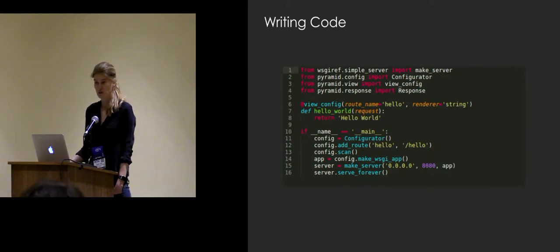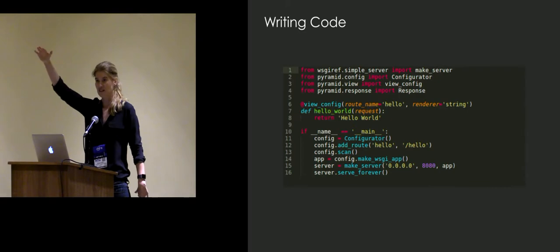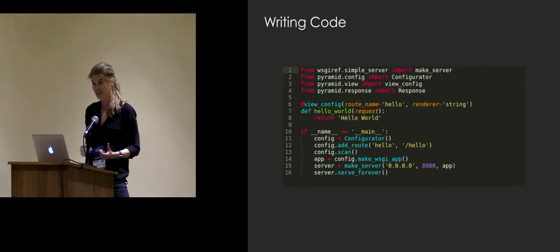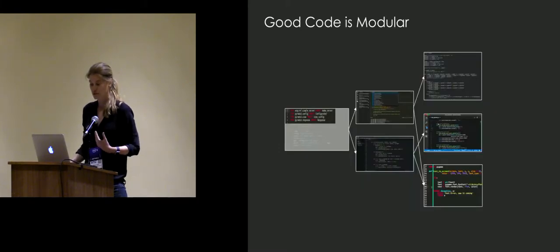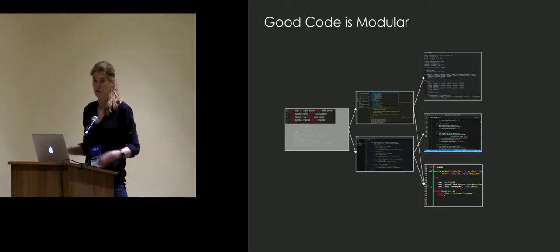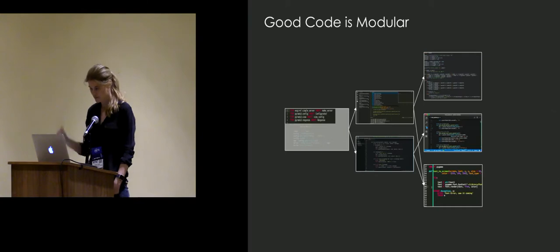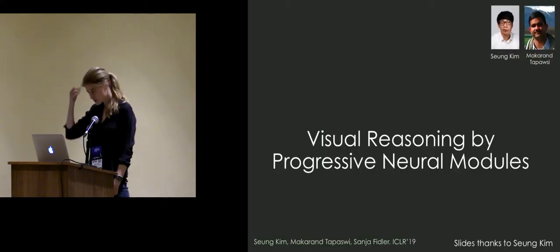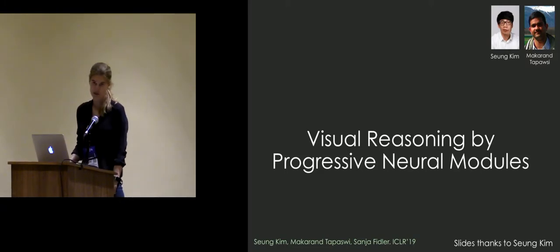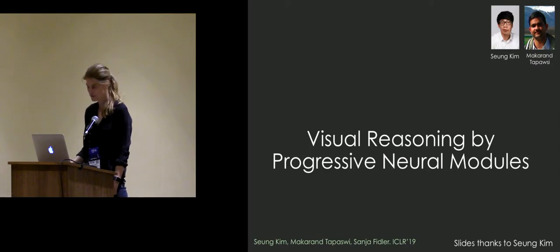There's an analogy to writing code or programs. You can write one function that solves your complicated task, but a much better way is to make it modular — a complex program calling functions that solve the sub-problems of the more complicated task. I'm going to introduce this work we recently did, a paper at ICLR that tries to take all these intuitions into account.